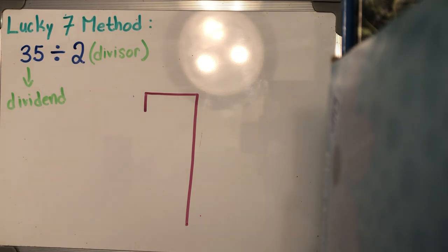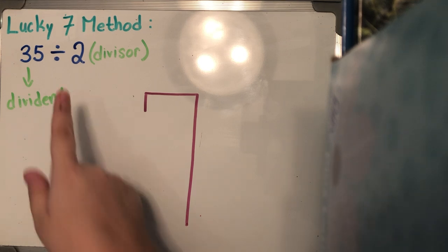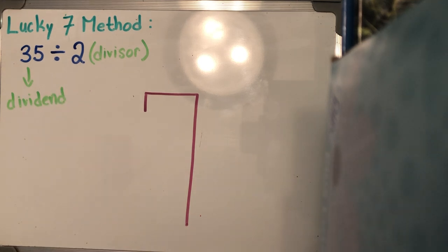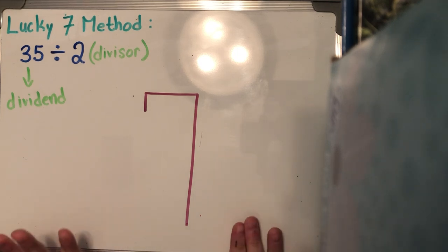Hi guys, it's Ms. M back with another video. We're moving past all of our multiplication strategies and methods that we've been learning the past couple days and we're going straight into the two division methods that we learned. One of them is our lucky seven method. We'll get into the box method a little bit later, but let's focus on this lucky seven.